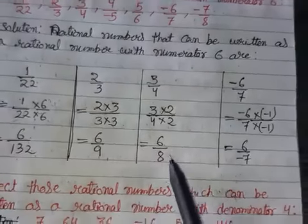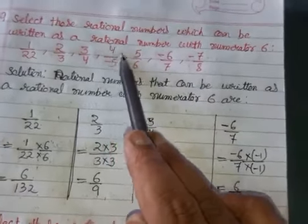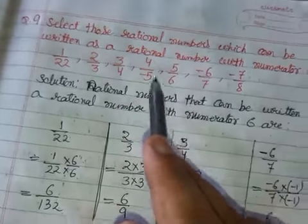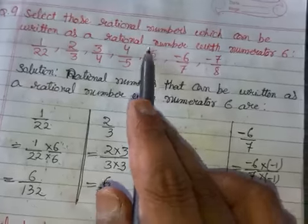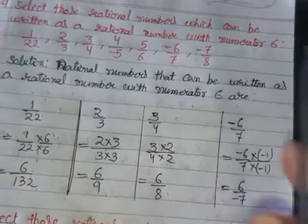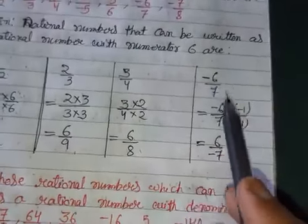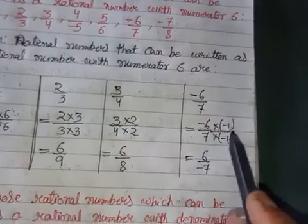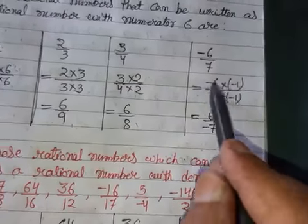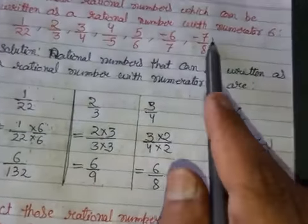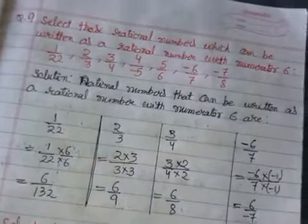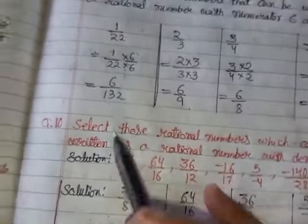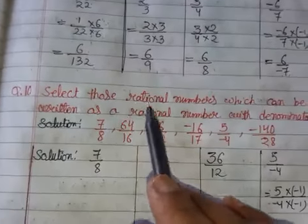For 3/4, multiply by 2: 3×2 = 6, 4×2 = 8, giving 6/8 — valid. The fourth option cannot be expressed with numerator 6 because 4×2 = 8. The fifth also cannot. For -6/7, multiply by -1/-1: negative times negative gives positive 6 over -7, so numerator becomes 6.